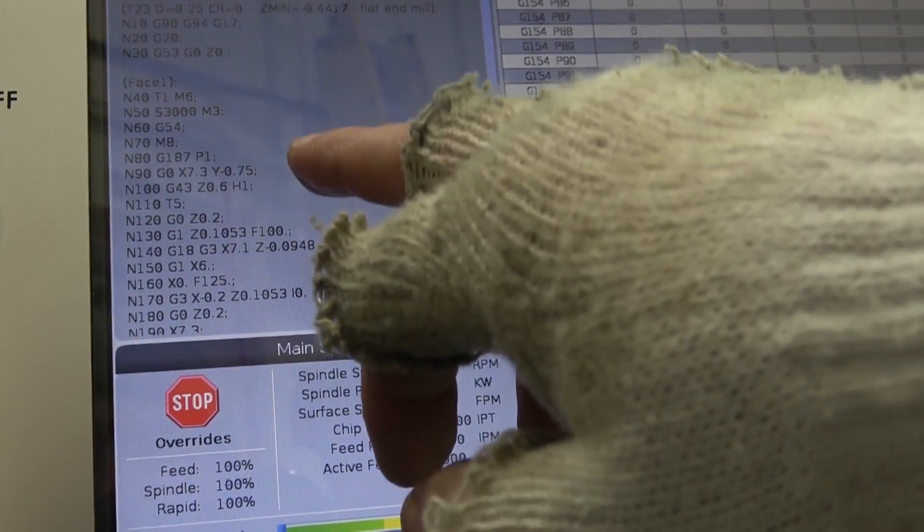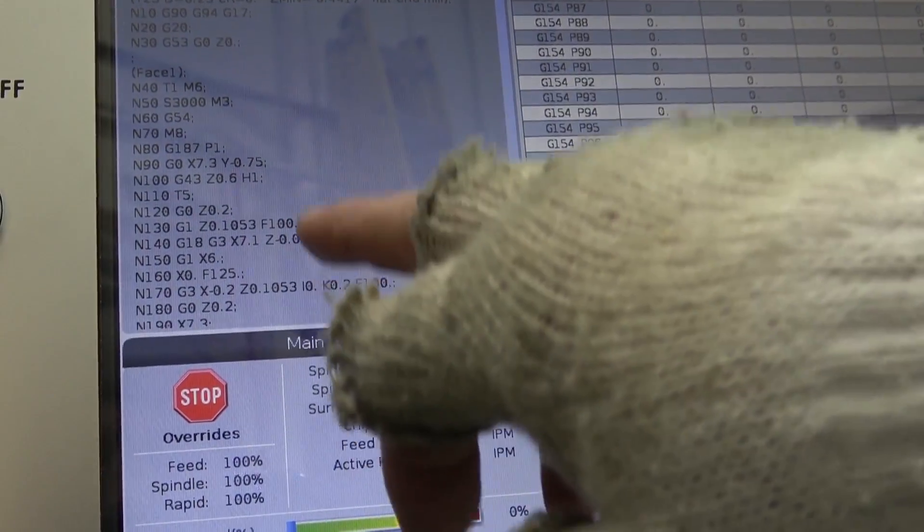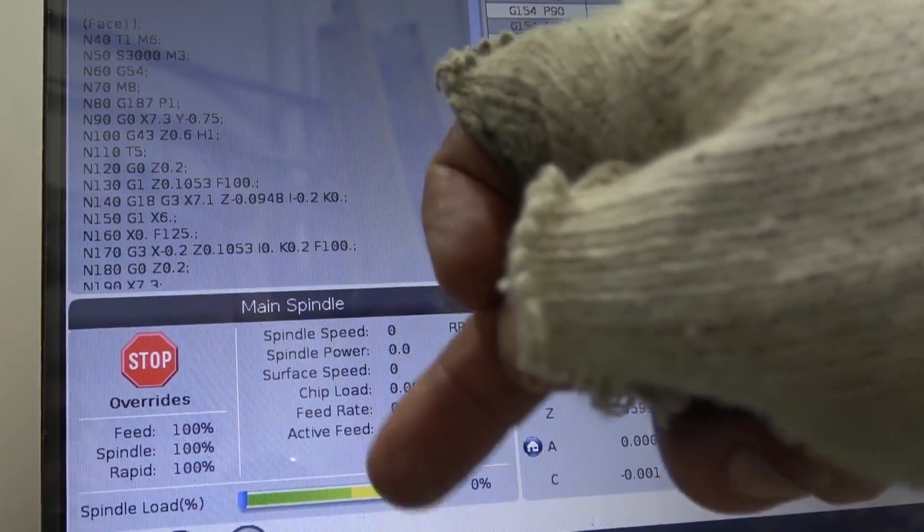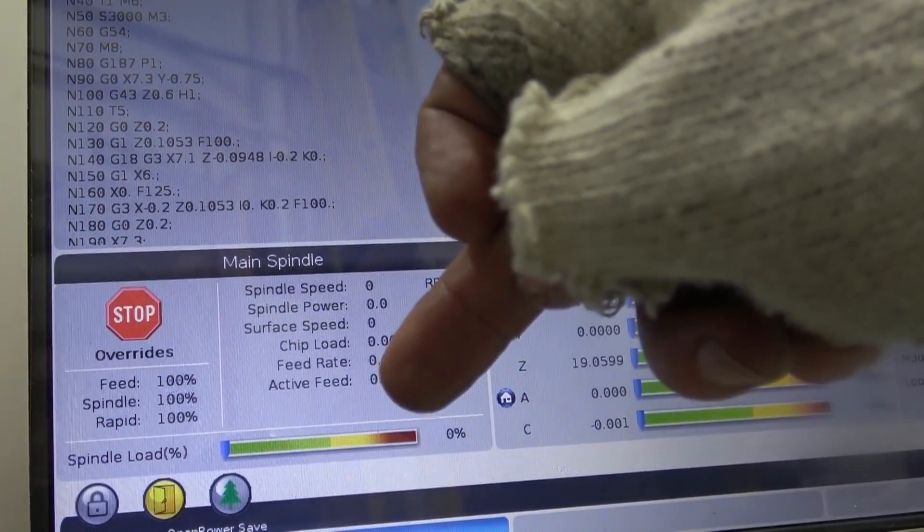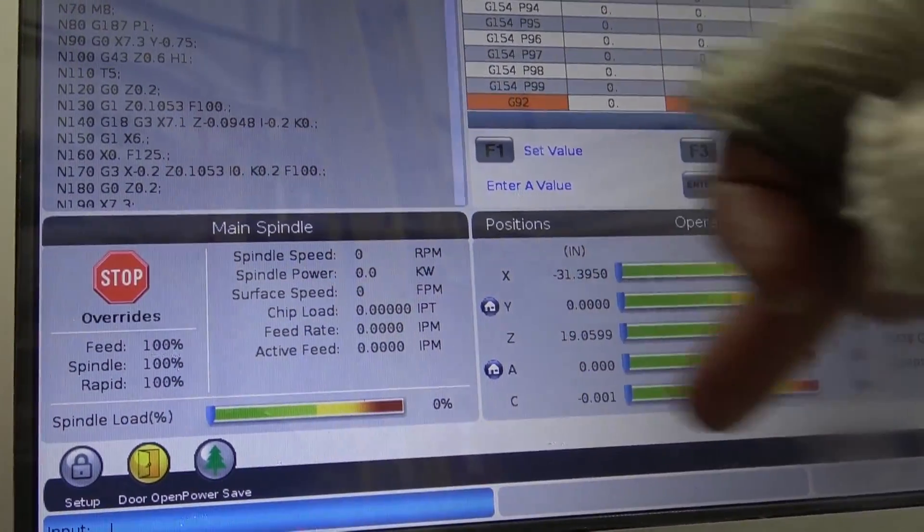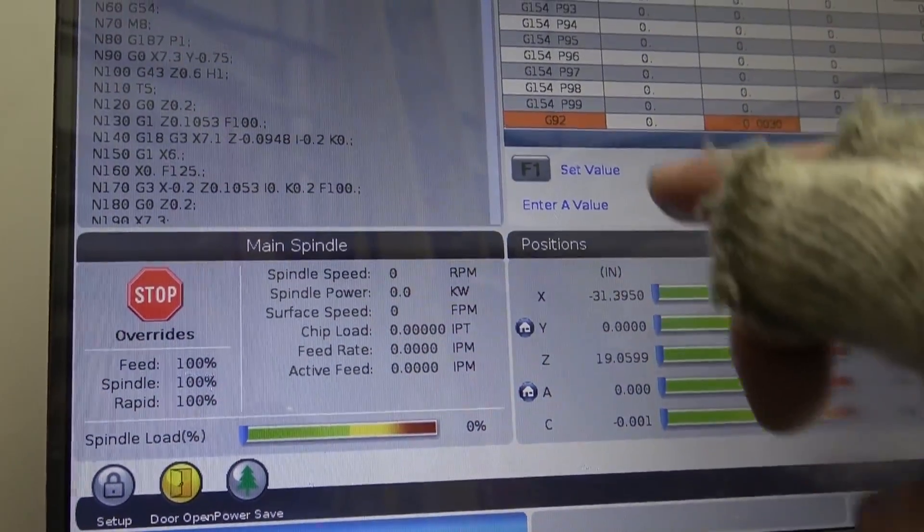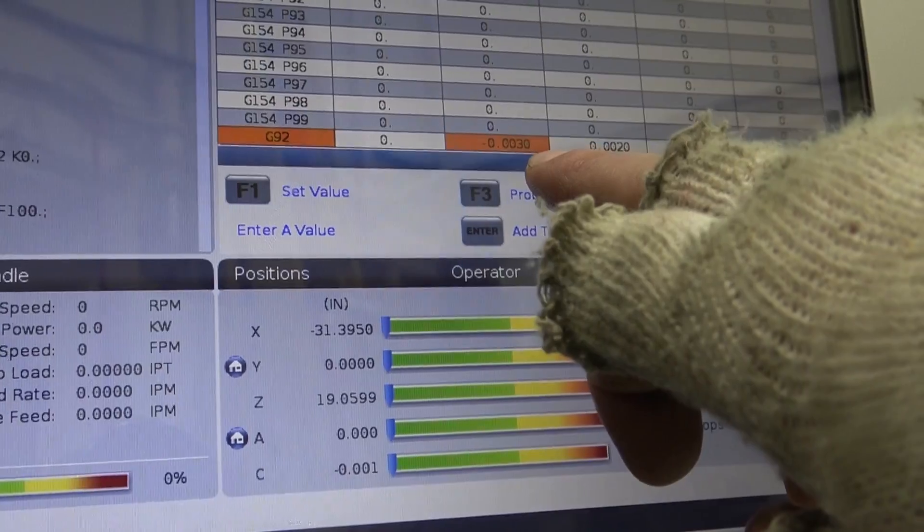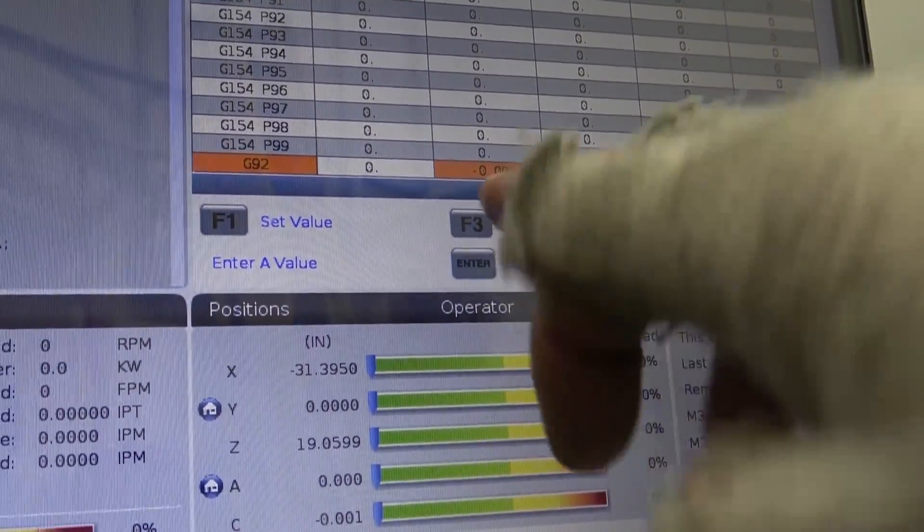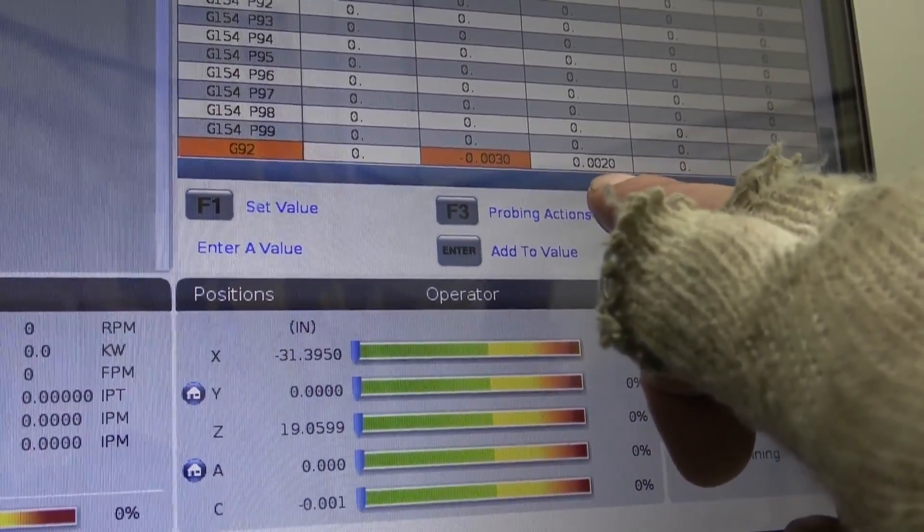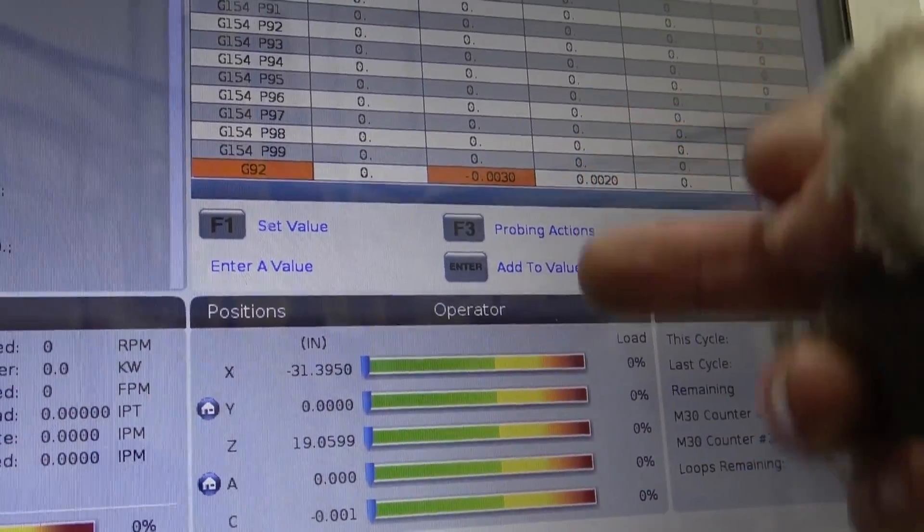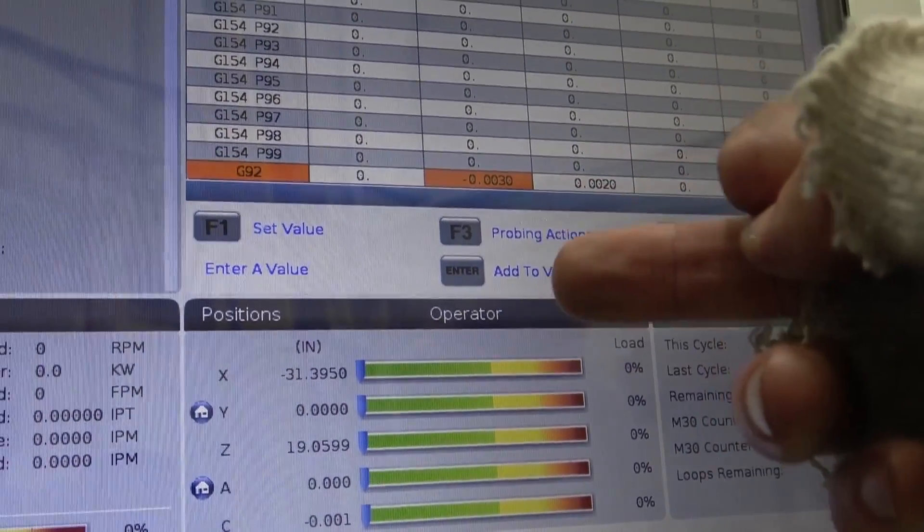So today we're going to run the same program. And it just does that stop, that physical stop in the jaw for the parallel built into the soft jaw. What I'm doing is I'm adding here in the G92, I'm adding three thou so that the table moves away from us three thou. And I'm adding two thou in the Z so the table or the tool stays off two thou.